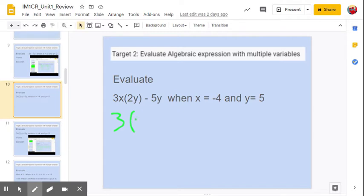So 3 multiplied by negative 4, multiplied by 2 times y. I'm going to substitute 5 for y, minus 5 multiplied by y, which is 5.